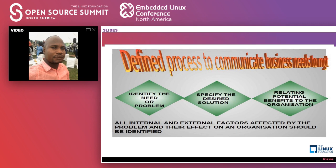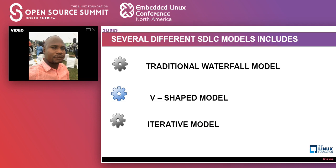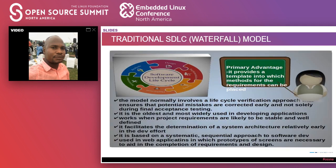We need to ask how this fits into our organization structure so that we can develop an application that will be successful in the market, considering all internal and external factors affected by the problem. Then we move on to software development models — we have the traditional waterfall model, the iterative model, and the V-model. I'm going to talk about them one by one.